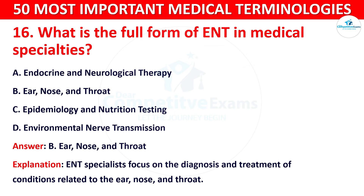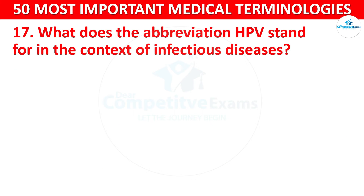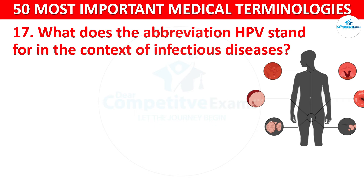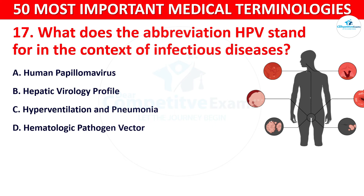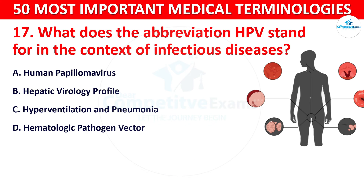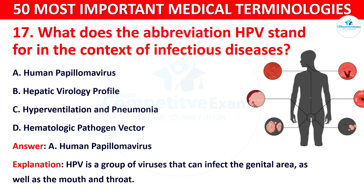Question number 17: What does the abbreviation HPV stand for in the context of infectious diseases? Your options are: A) Human Papillomavirus, B) Hepatic Virology Profile, C) Hyperventilation and Pneumonia, or D) Hematologic Pathogen Vector. The correct answer is A, Human Papillomavirus. HPV is a group of viruses that can infect the genital area as well as the mouth and throat.